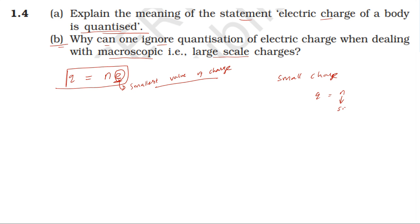For example, even a small charge: q is equal to 5 times e, which gives 5 times 1.6 into 10 to the power minus 19, which equals 8 into 10 to the power minus 19 coulombs. So even the smallest measurable charge involves multiple units of e.